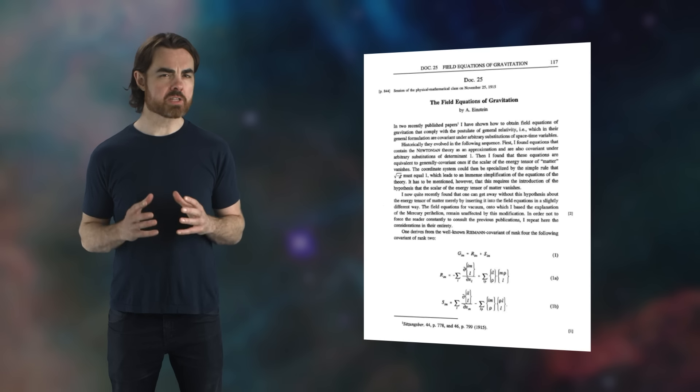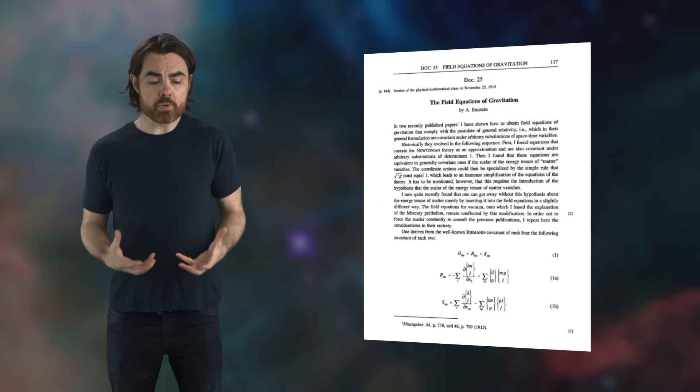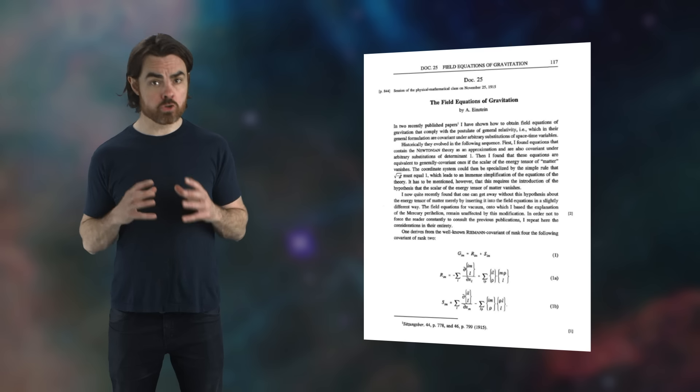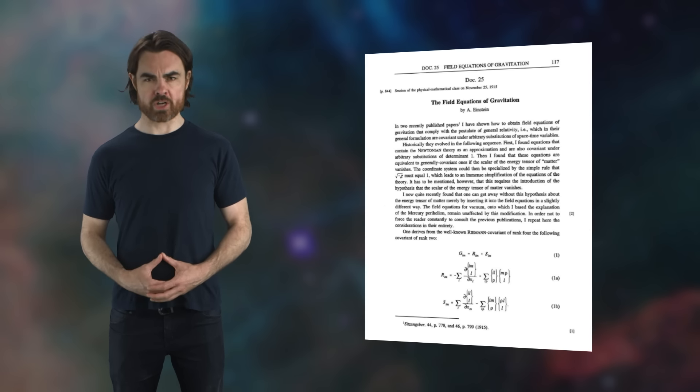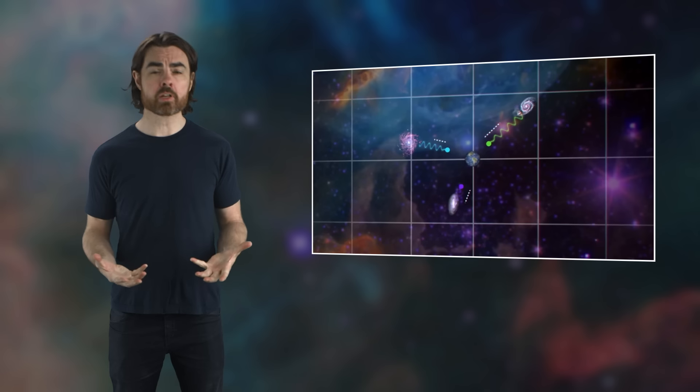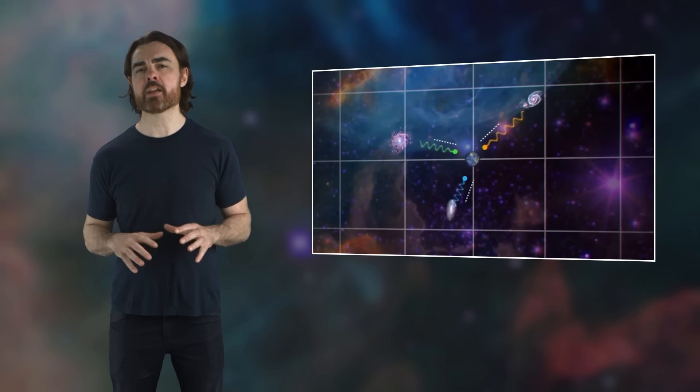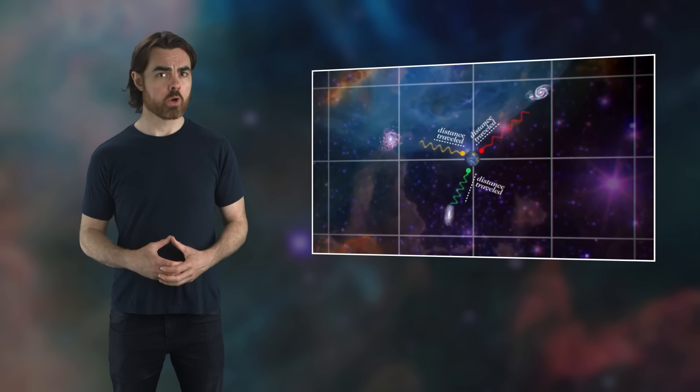When it was published in 1915, Einstein's general theory of relativity opened as many questions as it answered. Among them is the fact that energy is not always conserved in general relativity. The simplest example of this is the case of cosmological redshift. As the universe expands, light traveling through that expanding space is stretched out. Its wavelength increases. And so the energy of each photon drops. Where does the energy from redshifted photons go?